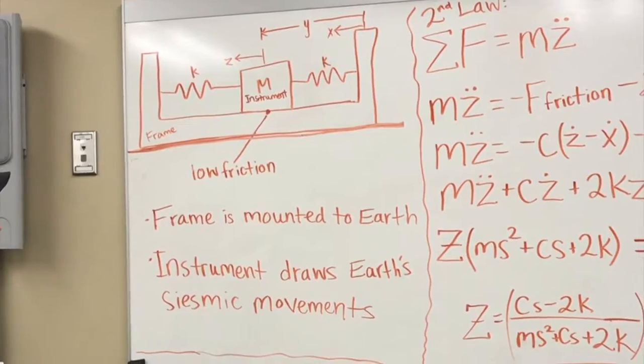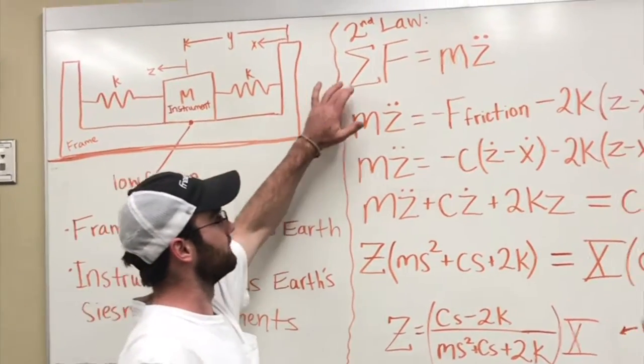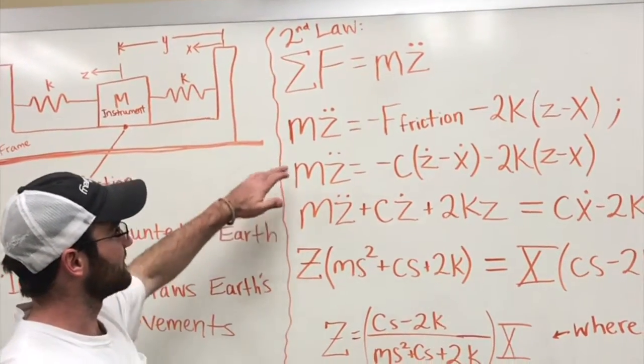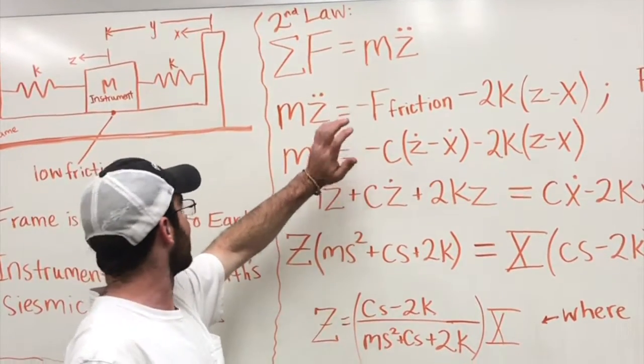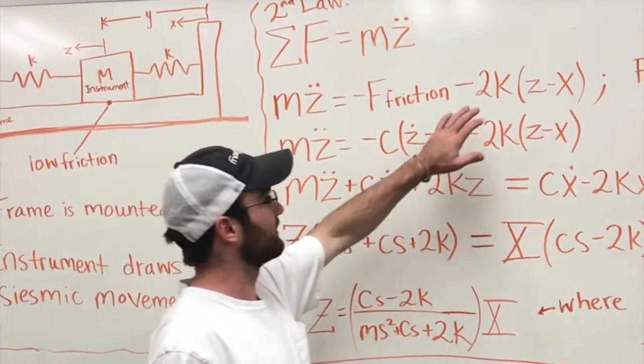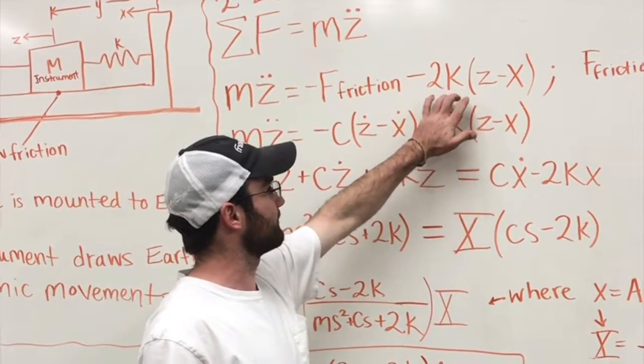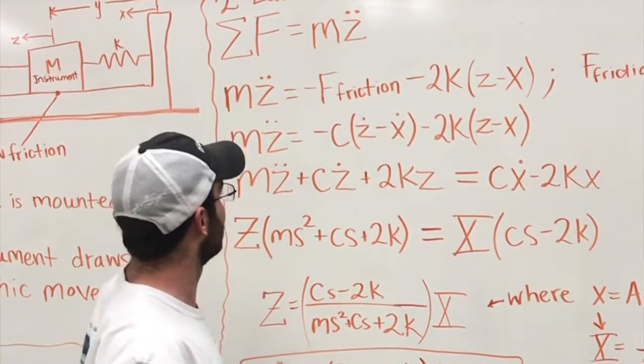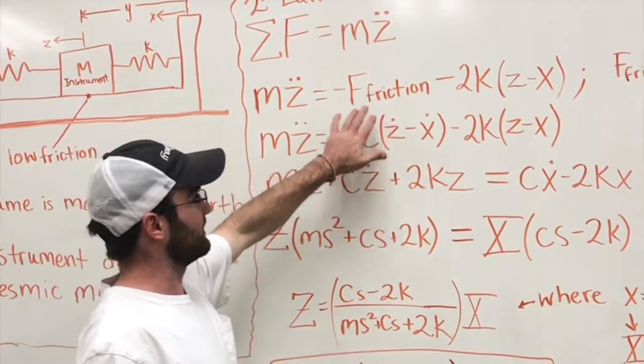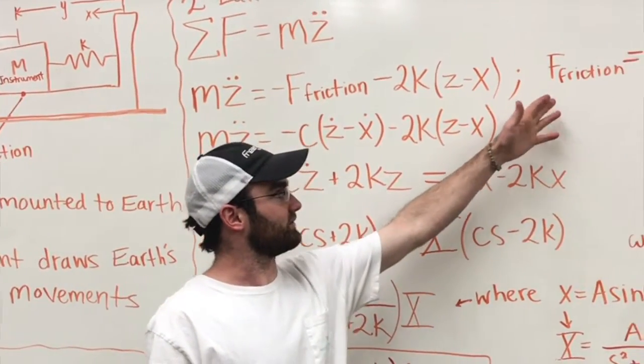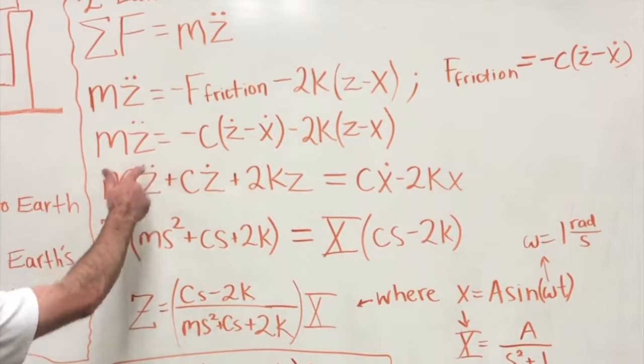So what we did, we started with the second law. The sum of the forces we have are our friction force and then we have our spring forces. There's two springs, so we have both the spring forces. Substituting the friction force equation that we were given, this is what it comes out to.